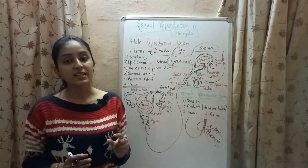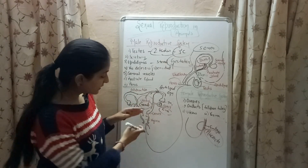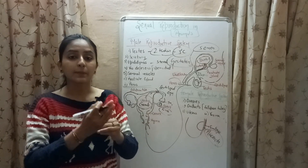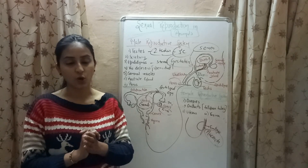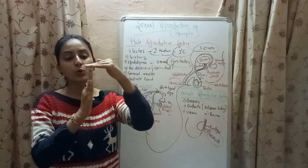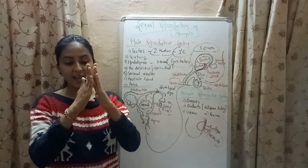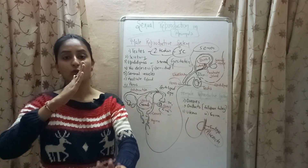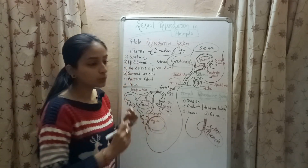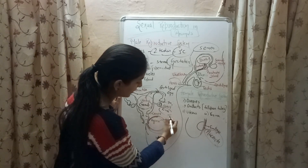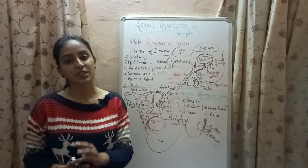After gestation, the release of a hormone called oxytocin inside the mother's body causes uterine contraction, due to which the cervix and vagina enlarge and the baby is expelled out. The process of expelling the baby from the vagina is known as parturition. So parturition is the process of expelling the baby from the mother's body after the completion of the gestation period.